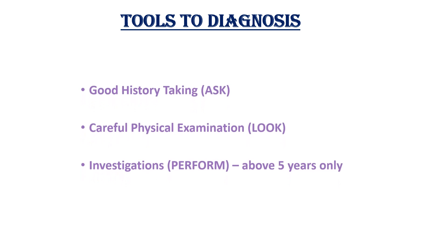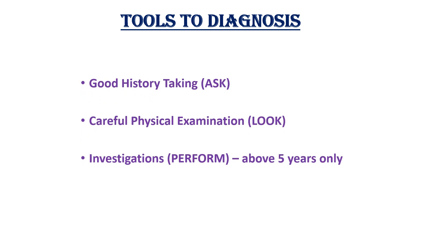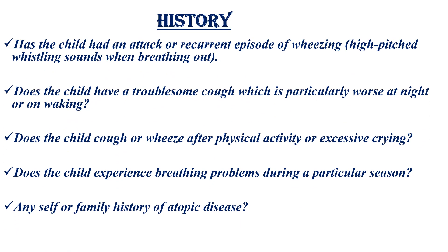When we see tools to diagnose asthma, as with all medical problems, good history taking, careful physical examination, and investigation — especially spirometry above 5 years — are the most important things. On history, we should ask whether the child had recurrent episodes of wheezing, troublesome cough particularly worse at night or on exercise, cough or wheeze after physical activity or excessive crying, breathlessness during a particular season, and any personal or family history of atopic disease.